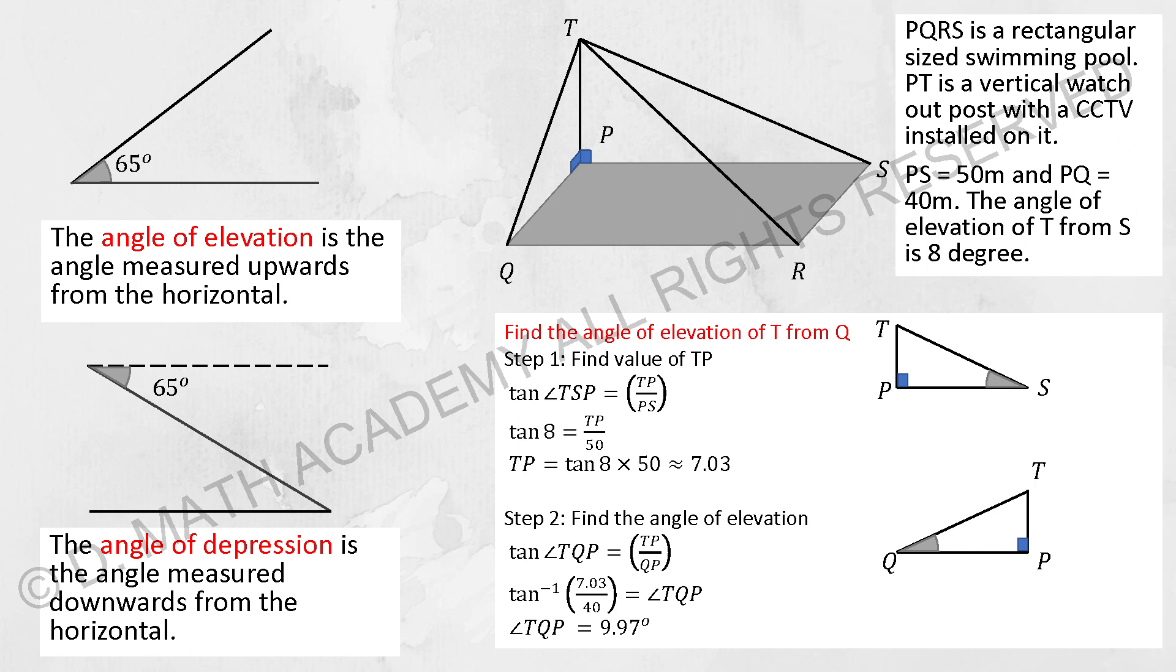So we are focusing at the triangle TPS. We have the angle of elevation which is 8 degrees. We are looking for TP and we have PS which is 50 as mentioned. So TP will be tangent 8 times 50 equals to 7.03. Whereby for you to find the angle of elevation...